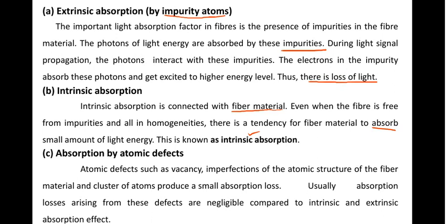Absorption by atomic defects occurs because atoms may not be properly aligned in the material. Sometimes there is an absence of atoms, creating vacancies and imperfections in the material. These imperfections lead to absorption of light, causing signal loss — this is called absorption by atomic defects.